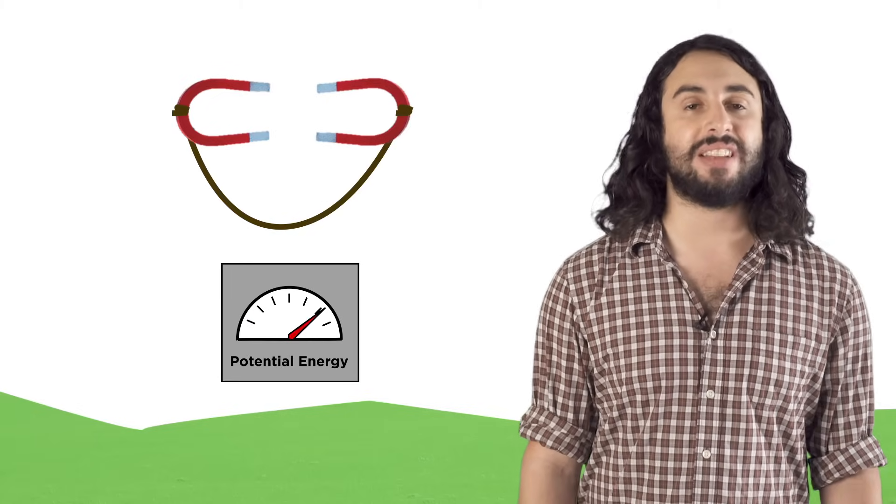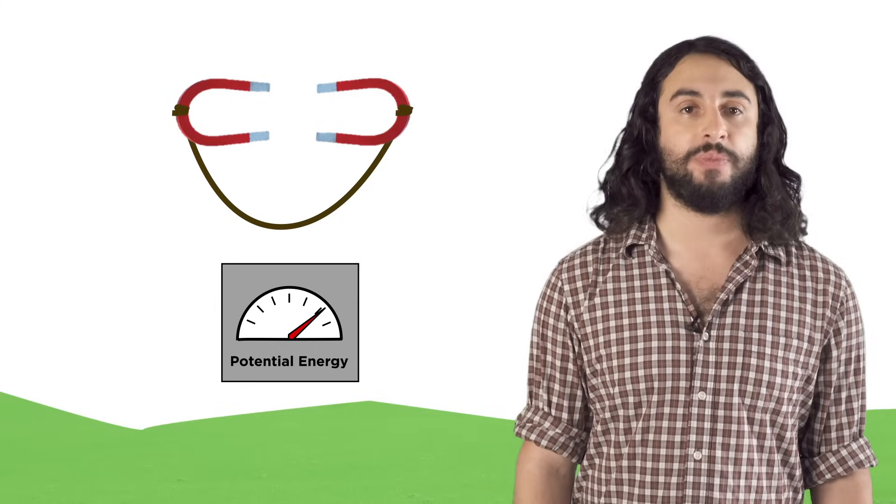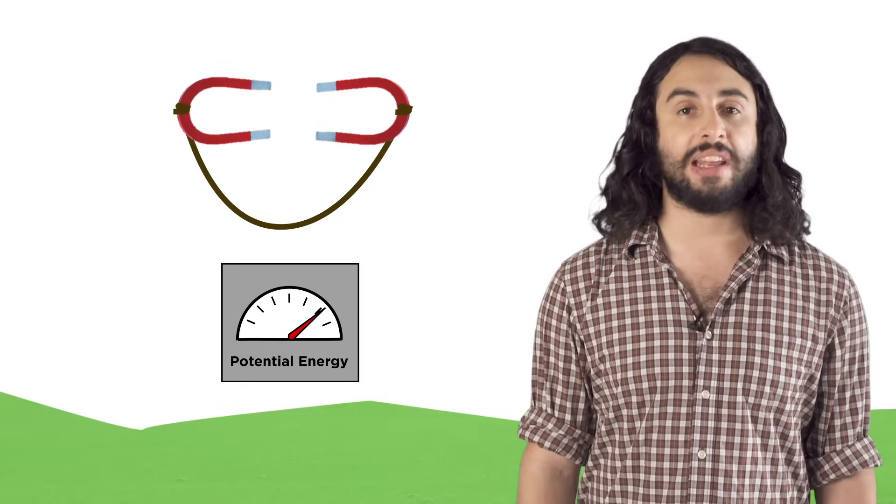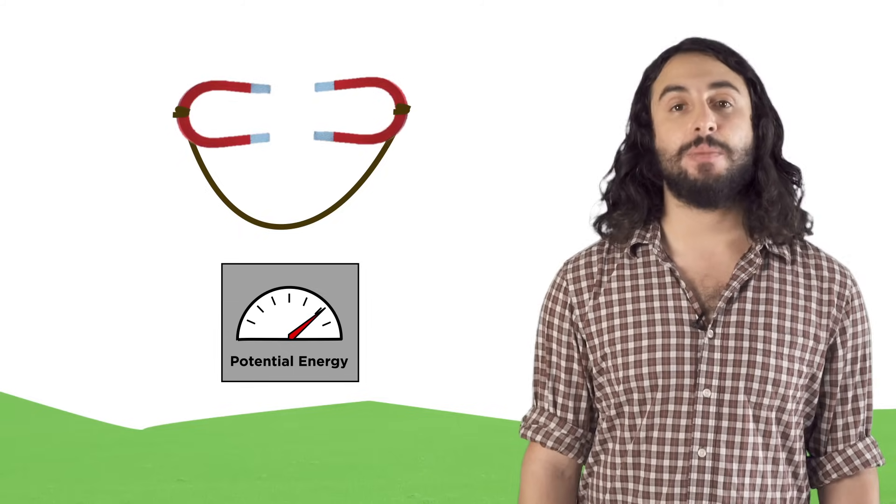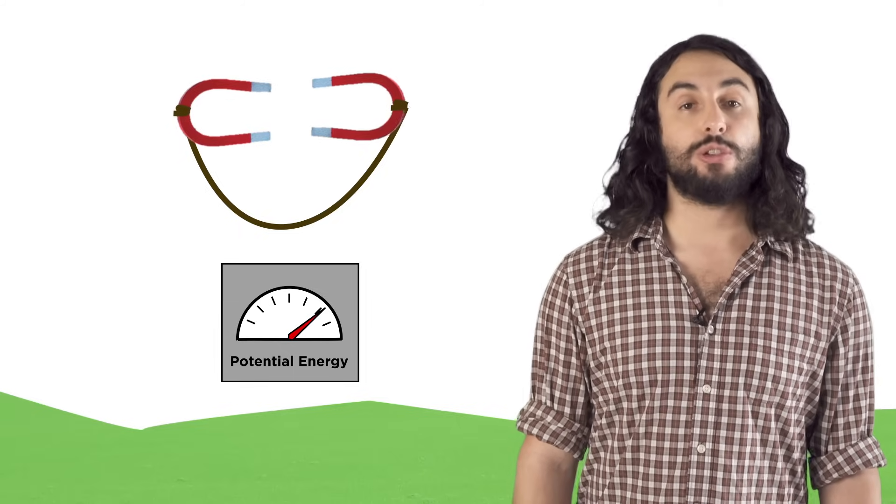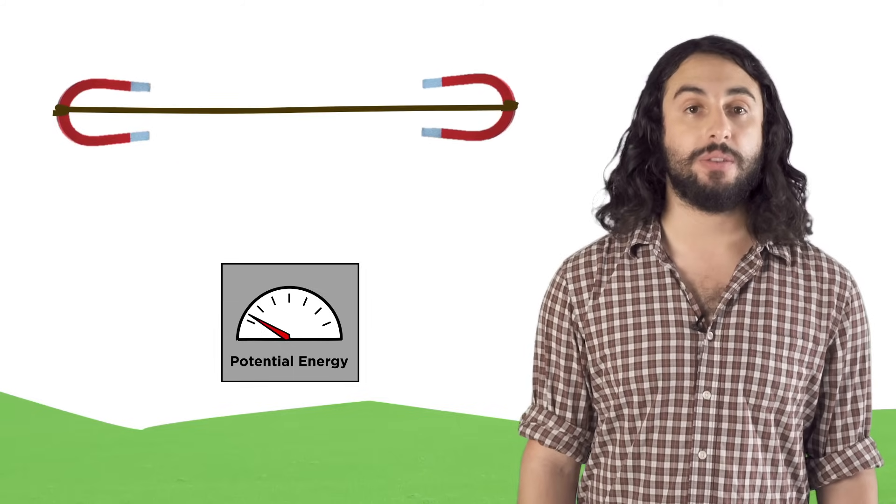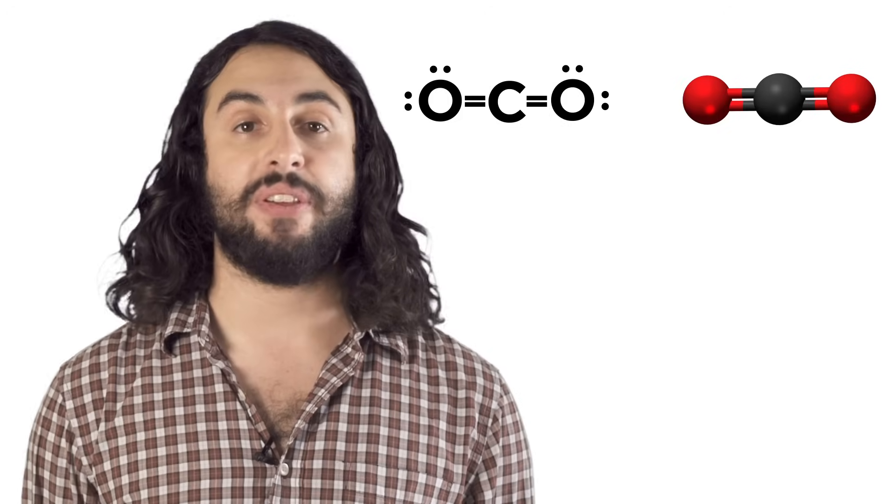Think of these electron clouds as magnets of like charge. The closer you push them together, the more potential energy they have. Things want to be at the lowest energy possible, so if you let go they will push apart, lowering their energies. Atoms will do the same thing.